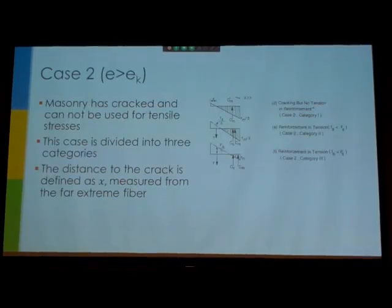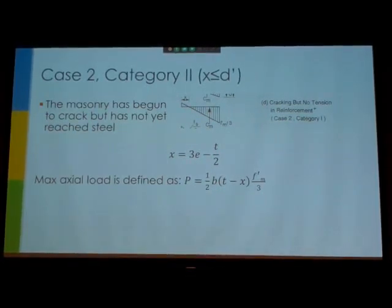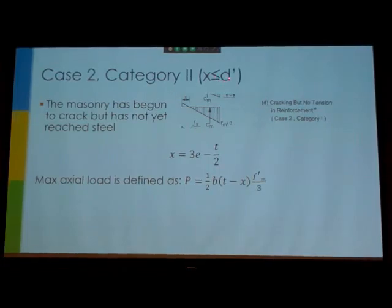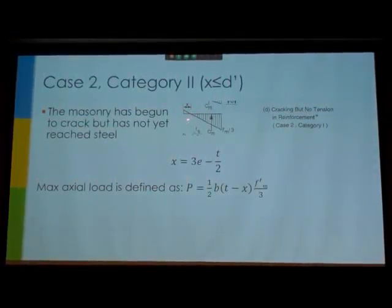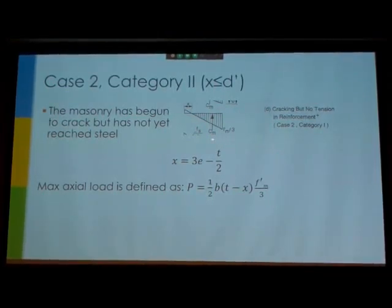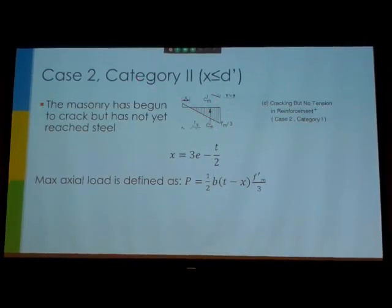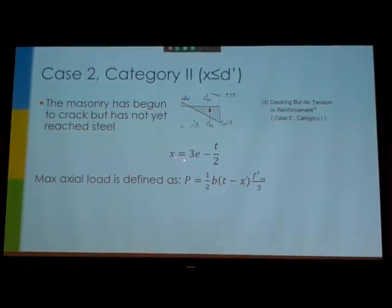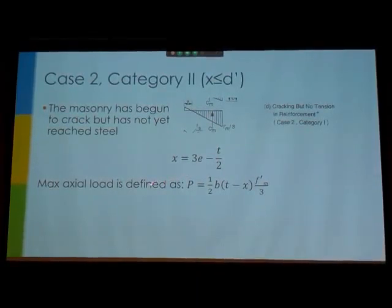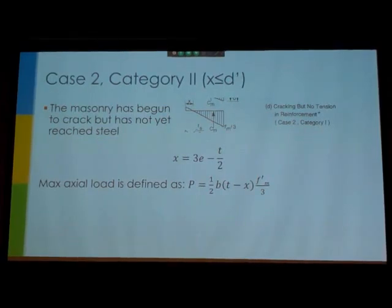So this is a typo here, this should be category 1. I noticed that this morning. But this is when x is less than d prime. What that means is this point of cracking has not yet reached the tensile strength of steel. So both of your regions of steel are still within the compressive region. You can calculate x here using your eccentricity and your thickness. And this also, once again, gives you a maximum axial.